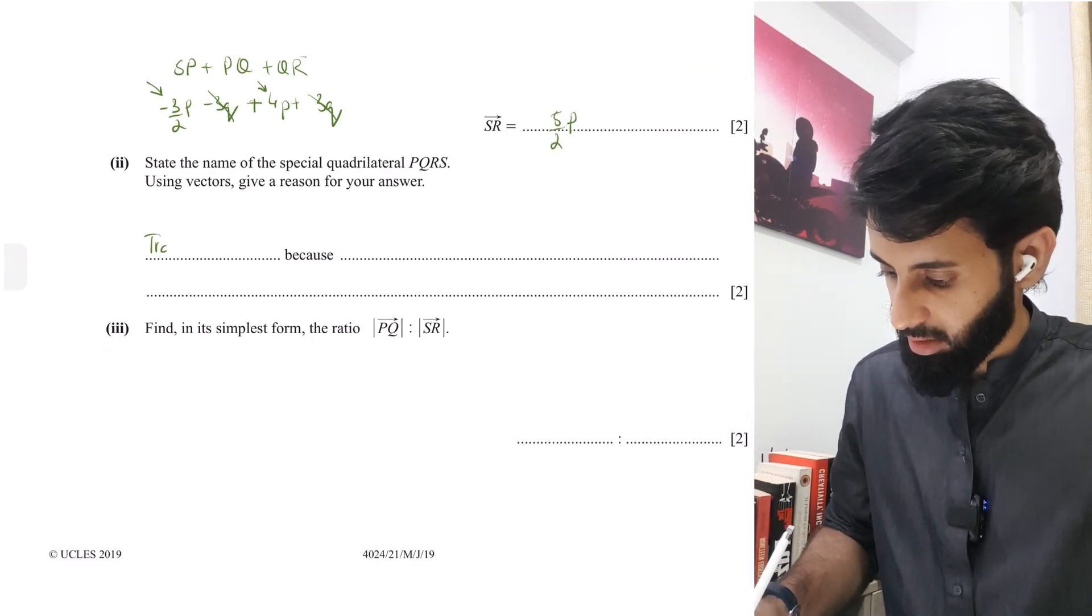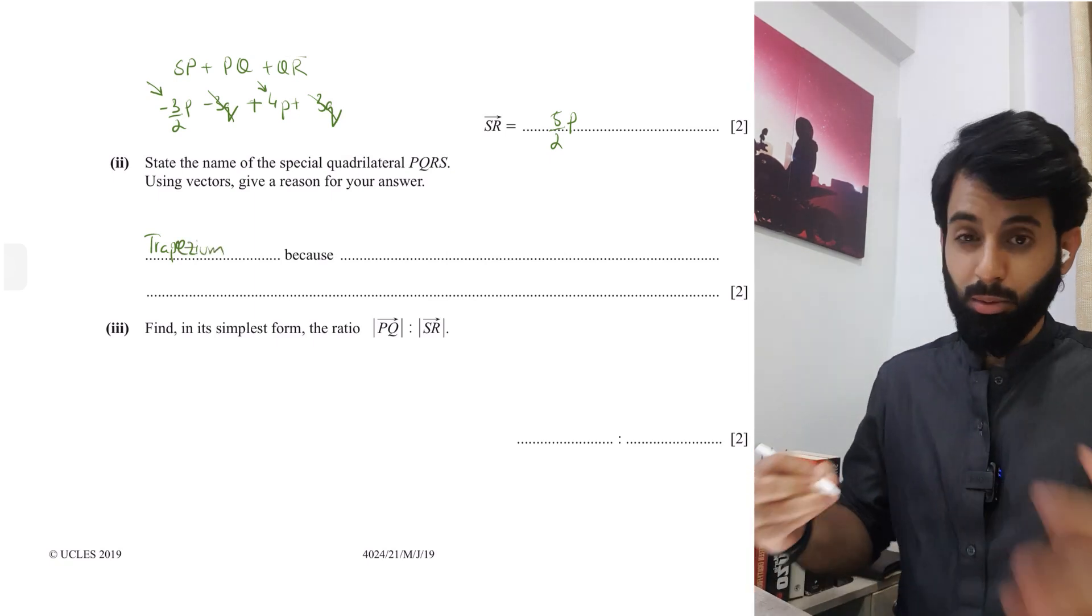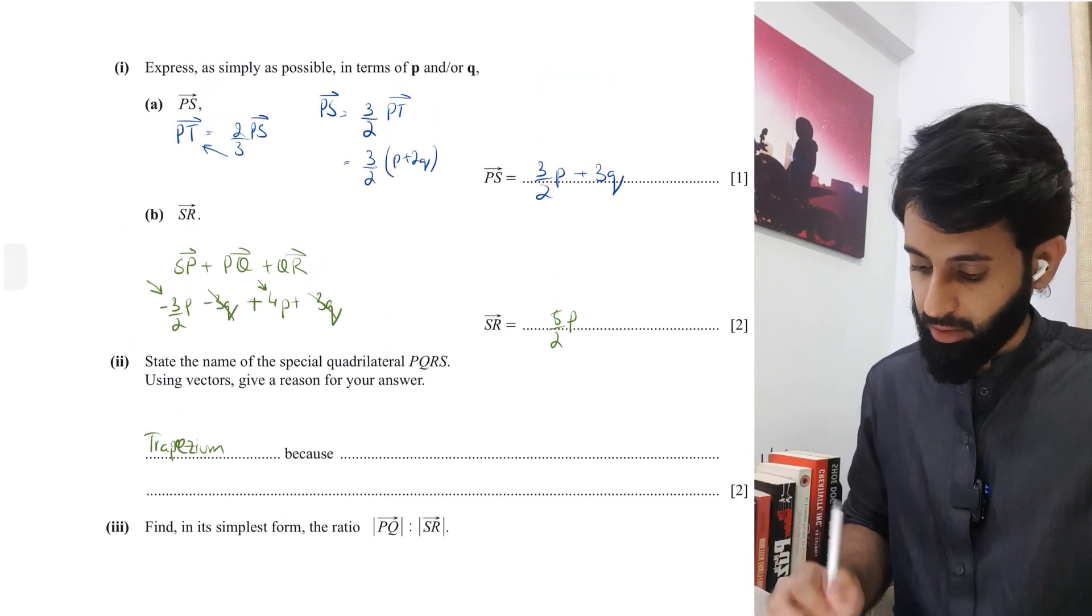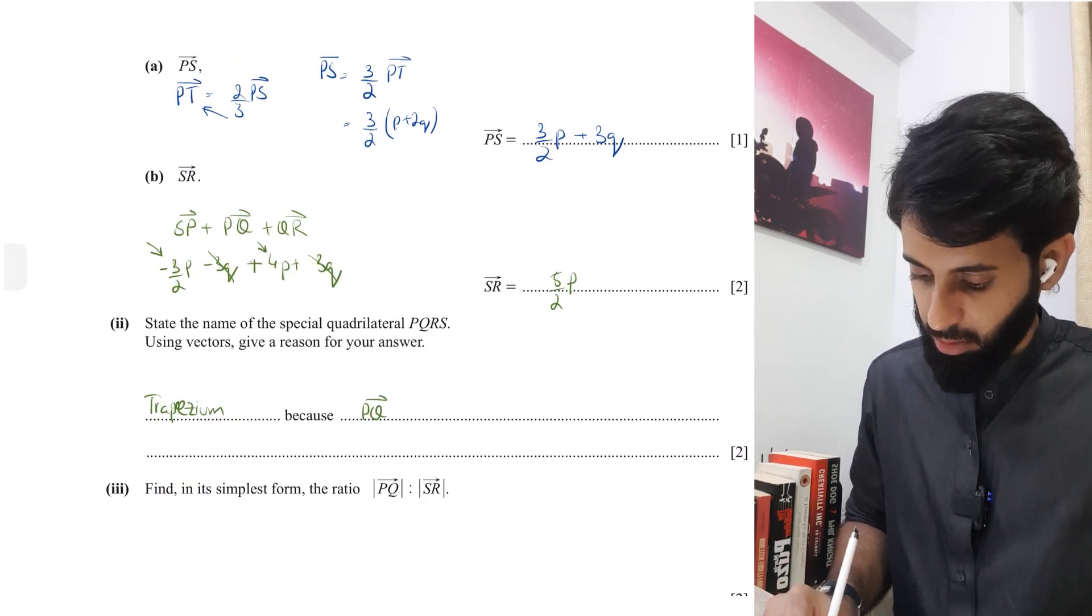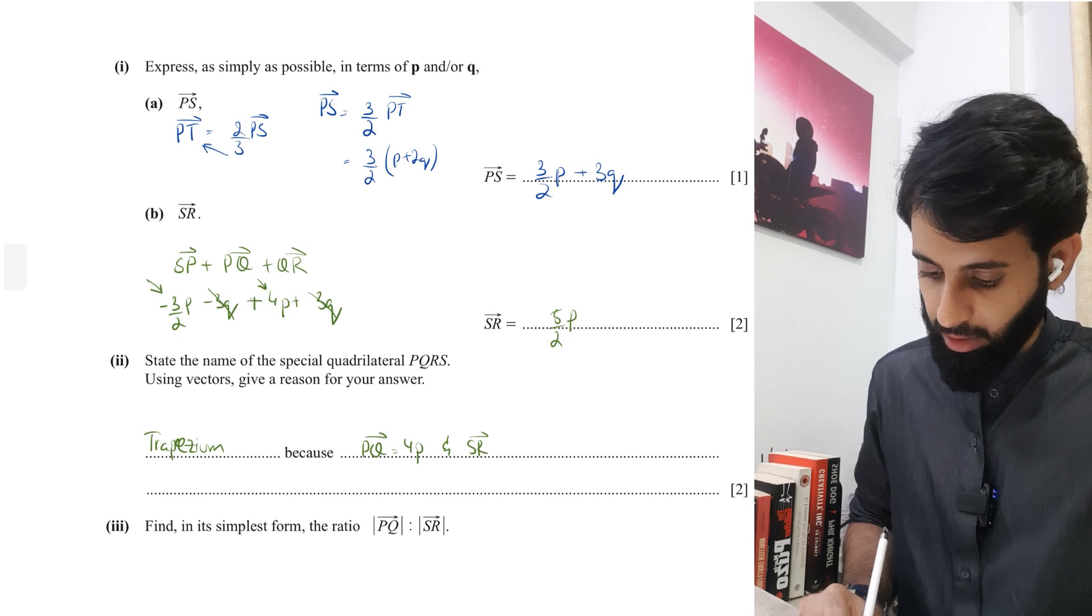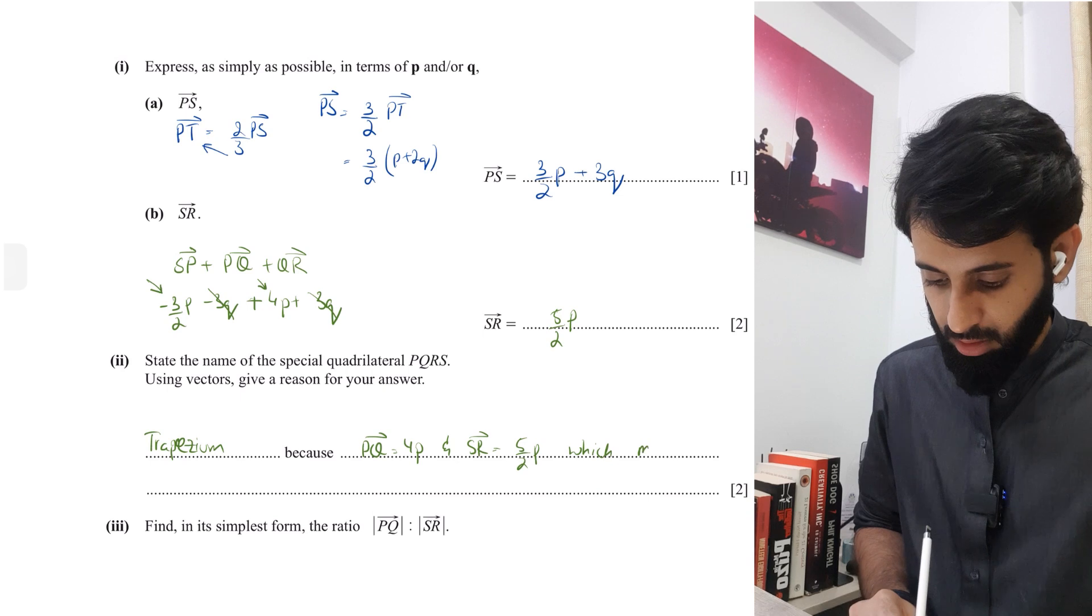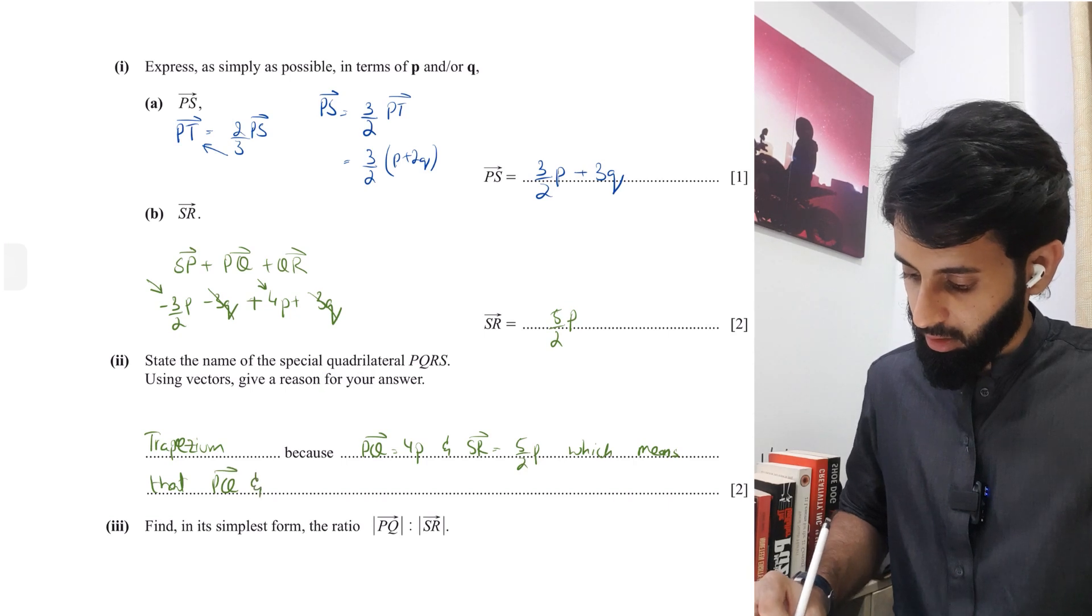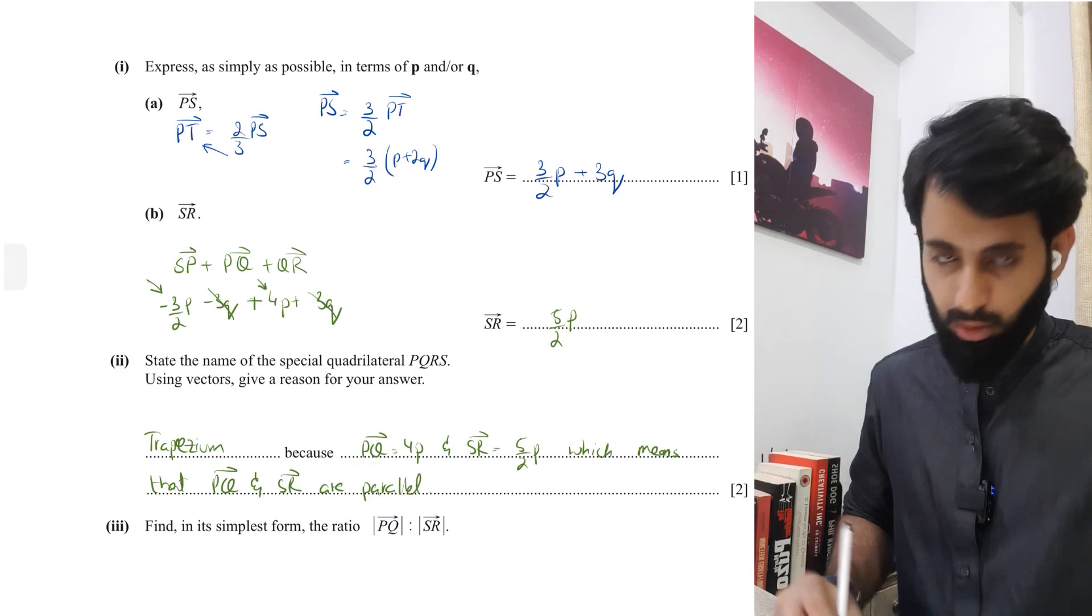So what happens when you have two vectors that are in the same direction and it's only the magnitudes that are different? That means that they are parallel. So basically we're looking at a quadrilateral that has opposite lengths as one pair of parallel sides. That happens in a trapezium. So the answer is trapezium.